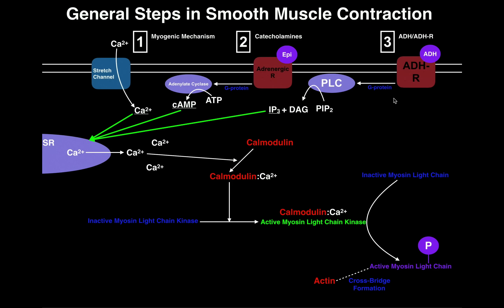Even when we talk about the process, smooth muscle is kind of the oddball — the anomaly. It's going to be very different from skeletal muscle and cardiac muscle, which are more or less similar to each other. Rather than just having a bunch of voltage-gated sodium channels that initiate contraction, there are actually three different ways to initiate contraction of smooth muscle.